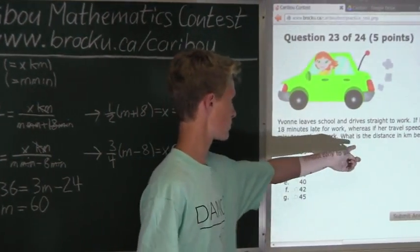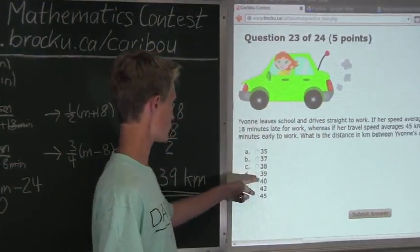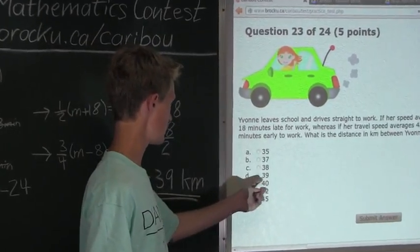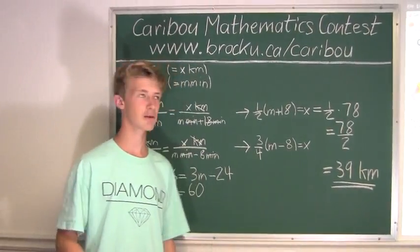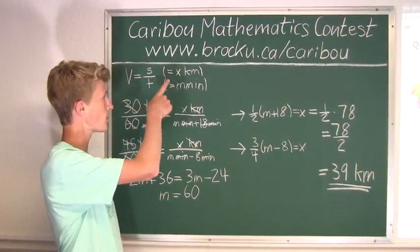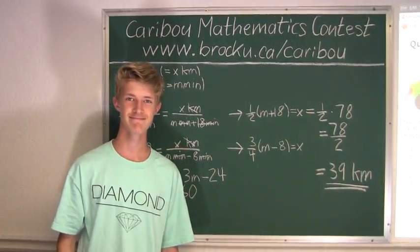So as we can see here, it says, what is the distance in kilometers? We can see the right answer is option D, 39. If you'd like to know more about this contest, please feel free to visit our website at www.brocku.ca/caribou.